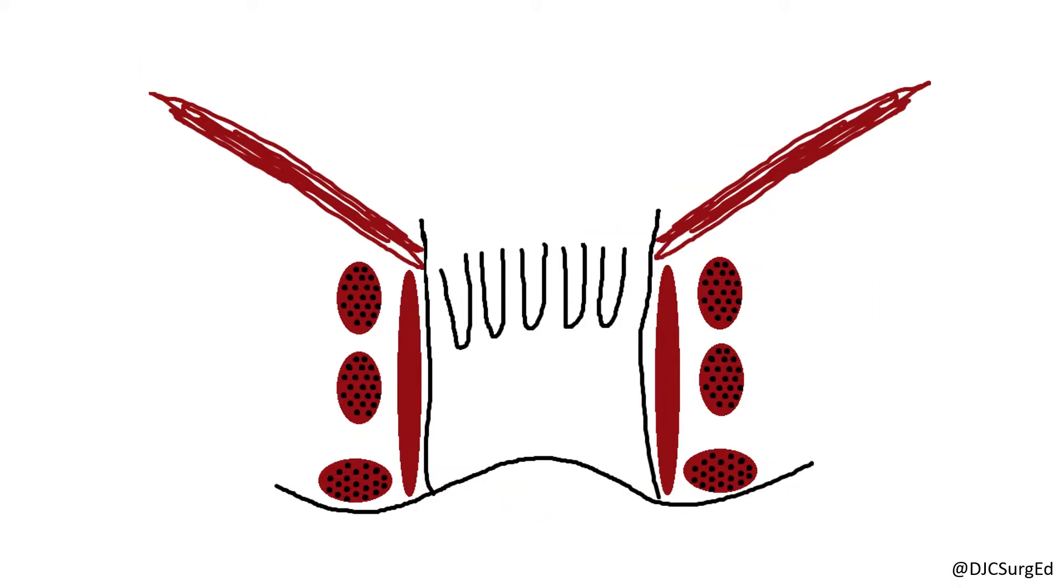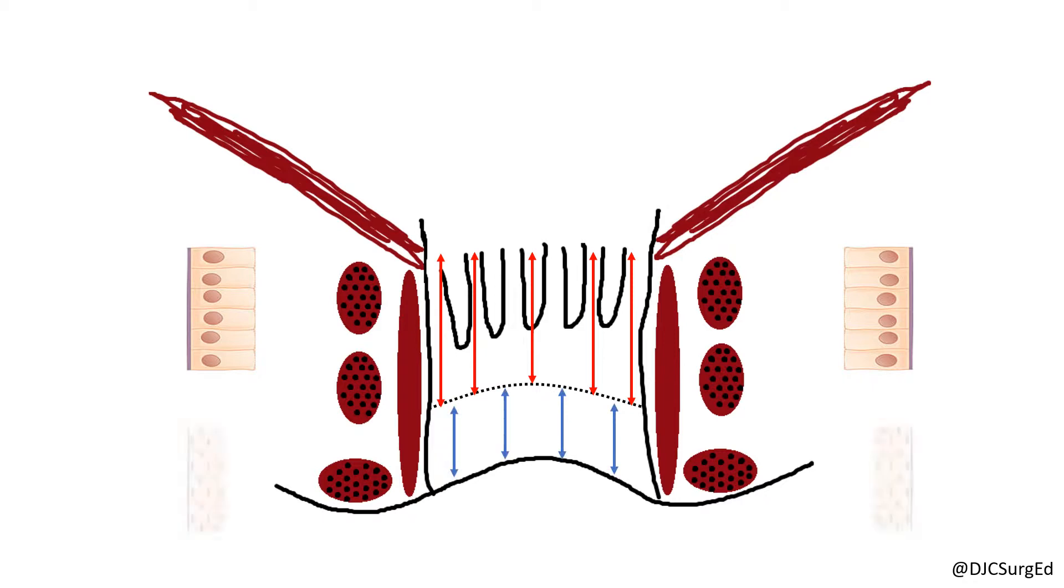Histologically, the anal canal has a variable lining. The proximal two-thirds of the anal canal is columnar epithelium, which transitions distally to stratified squamous epithelium, or anoderm.